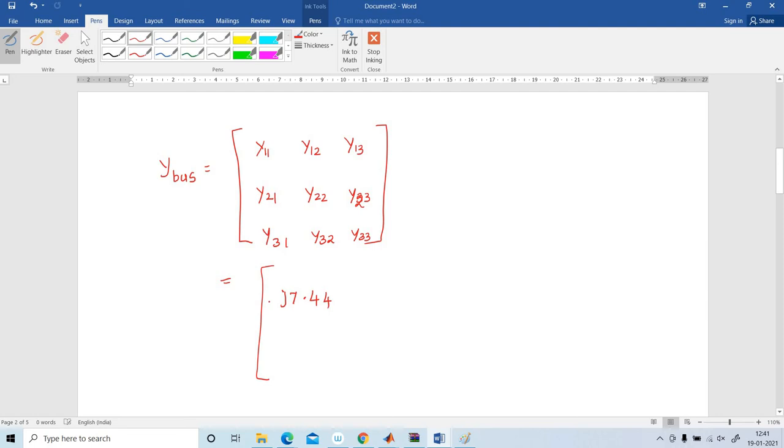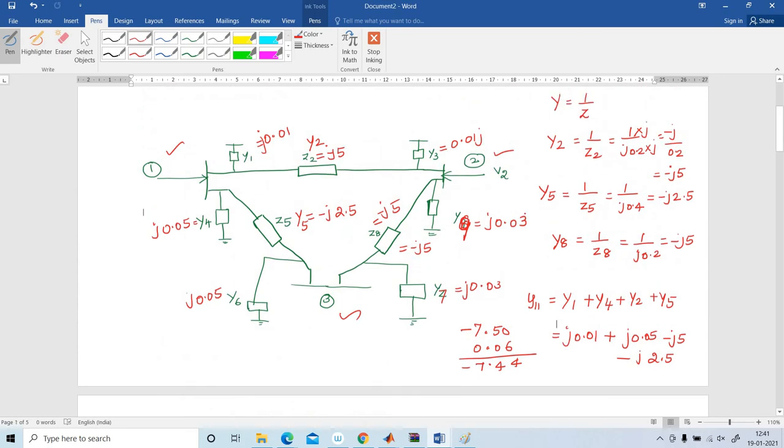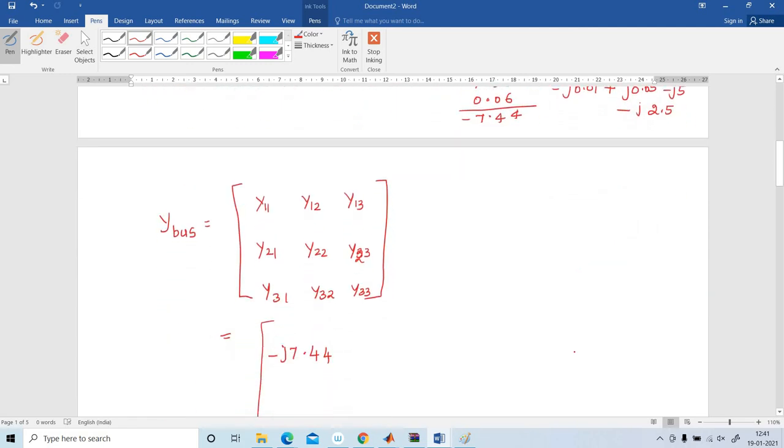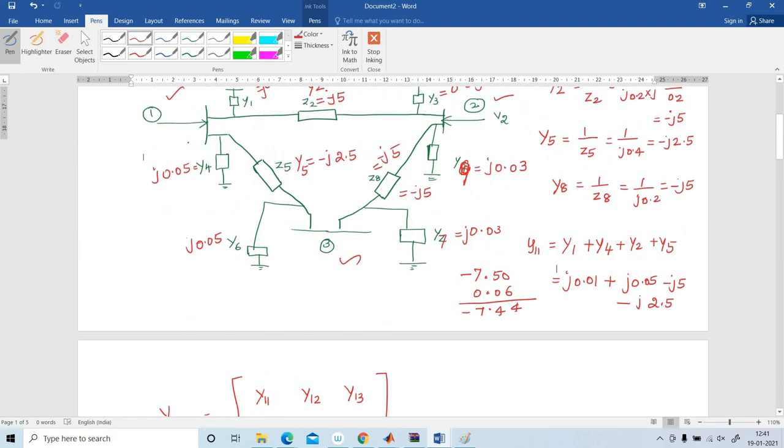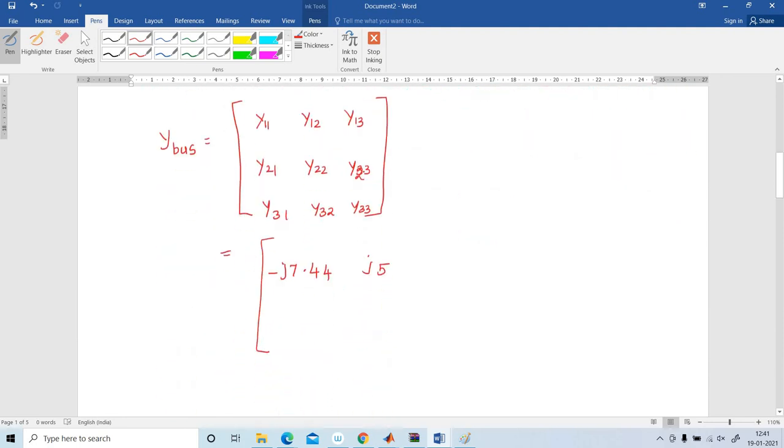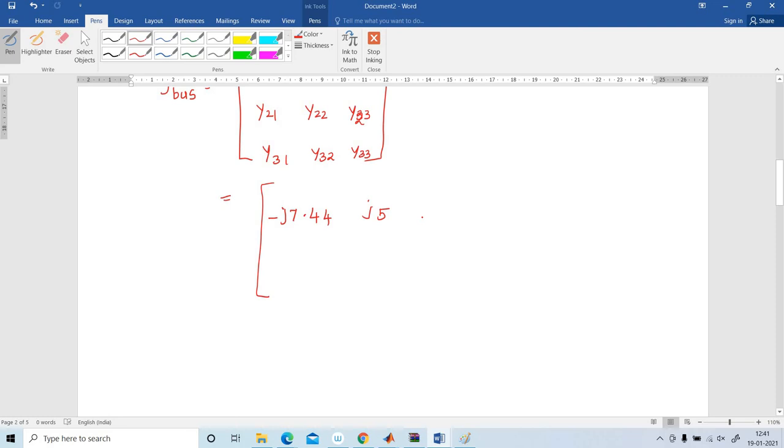And next Y12. Y12 is the element that is connected between bus 1 and bus 2. That is minus j5. But how to write this? Minus of minus j5, so plus j5. What is Y13? Y13, the element connected between the bus 1 and 3, so the element connected is Y5. Already we are having minus, but how to write this? Minus of minus j2.5, so plus j2.5.